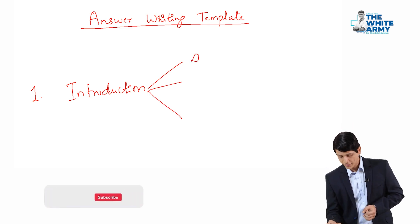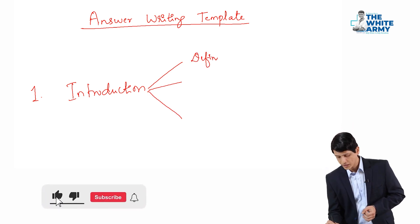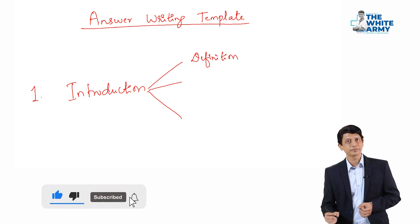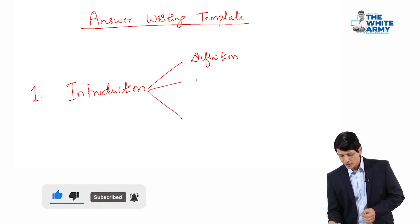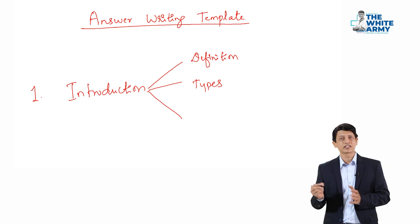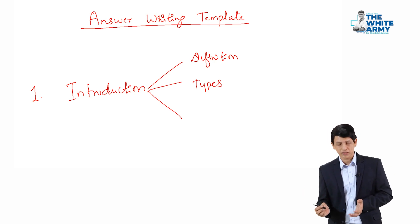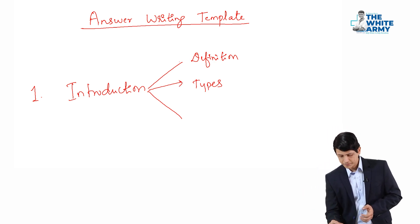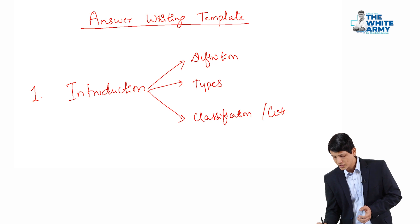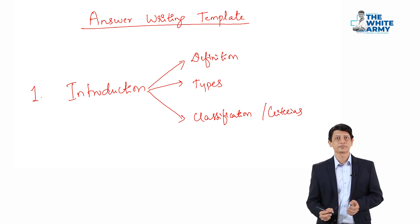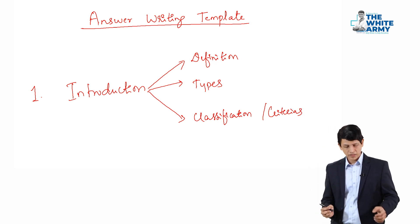You may have to write a definition of the same or you may have to write the types. If there are any particular types of the condition, you may have to include that. Then third thing is, if there are any classifications or criteria, you may include as a third subheading. This is the first introduction.